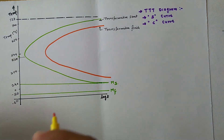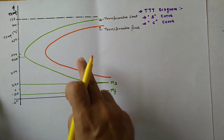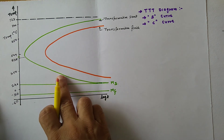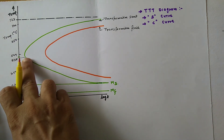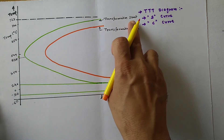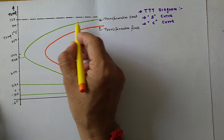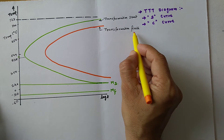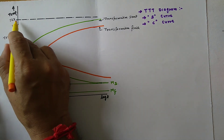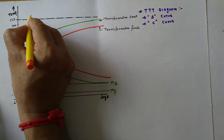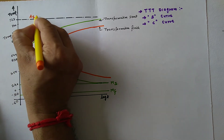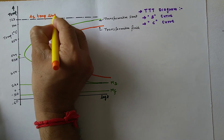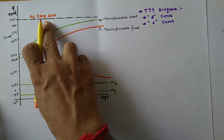I have just drawn this diagram, as in the previous lecture we had also seen how to draw this TTT Diagram. So this is the start line — transformation starts from this line. And this is the line where transformation finishes. And this is the A1 line — the lower critical temperature line A1.